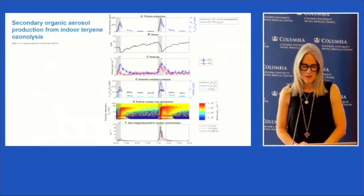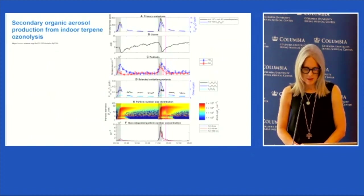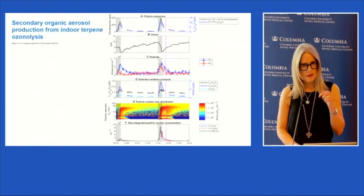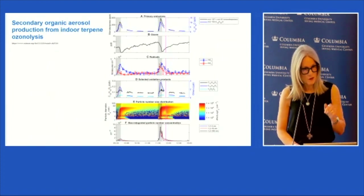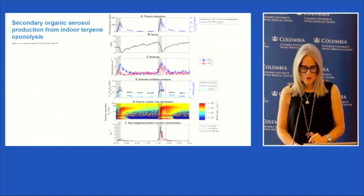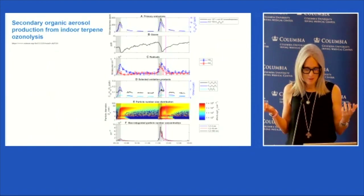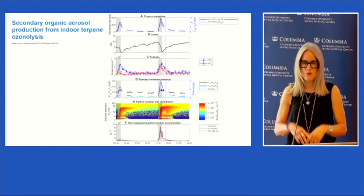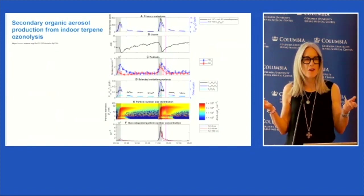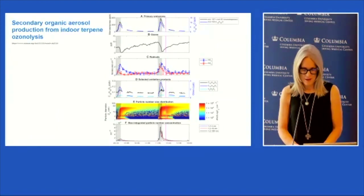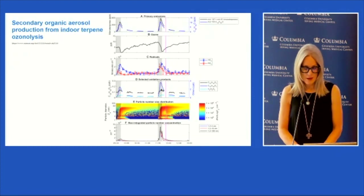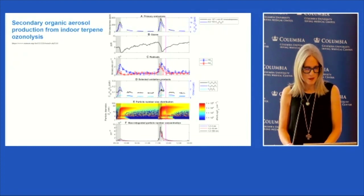This graphic shows the chemistry that can happen indoors when there's ozone present, brought indoors from outside by ventilation or infiltration. Even though indoor levels of ozone are typically 30% of outdoor levels, the ozone reacts with what's inside. Primary emissions — like the smell when you peel an orange — are at the top graph. Radicals are then formed in the indoor environment, and subsequent oxidation products and ultrafine particles are formed as shown in the subsequent slides.